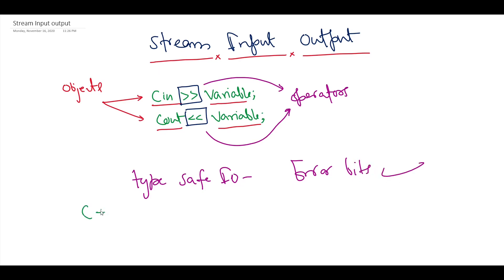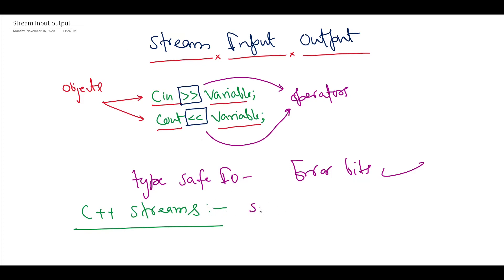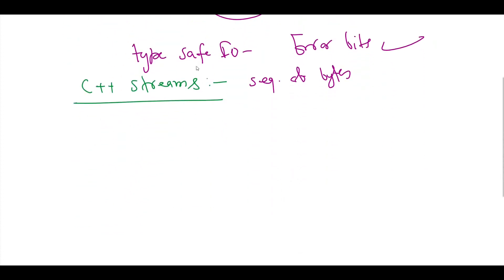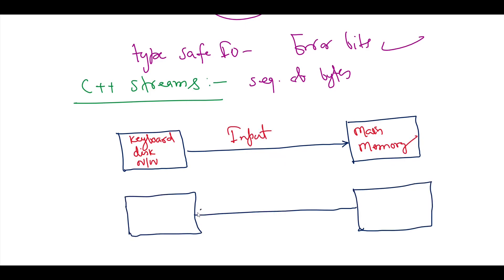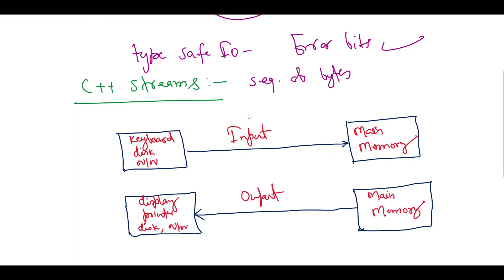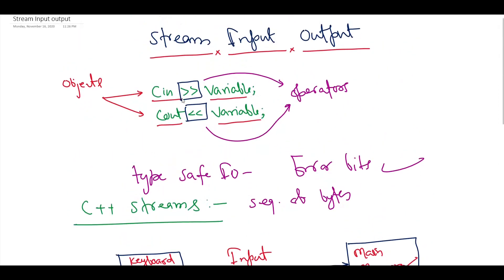Let's talk about the way C++ performs IO operations. IO operations in C++ are performed in streams, which means we have some sequence of bytes called streams. In an input operation, the byte flow goes from a device like a keyboard, disk drive, or network to the main memory. In an output operation, the byte flow goes from main memory to the device, and the device could be a display screen, printer, disk drive, network, etc.